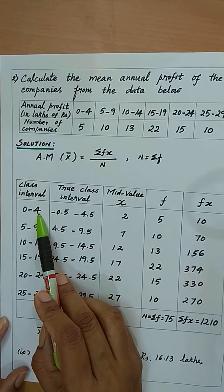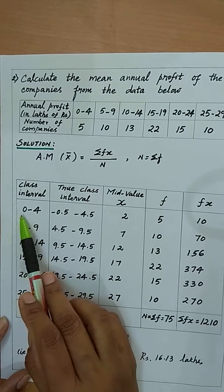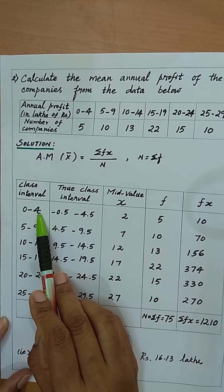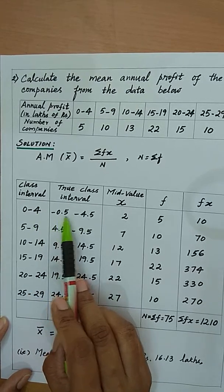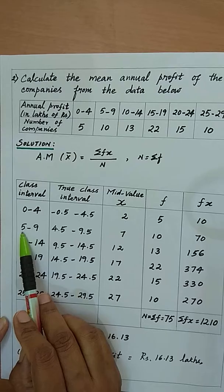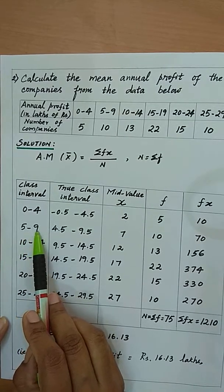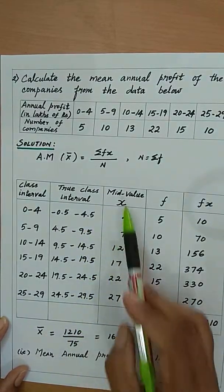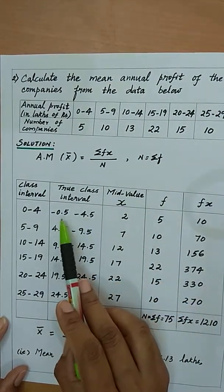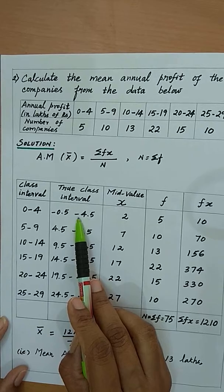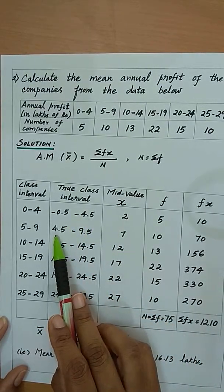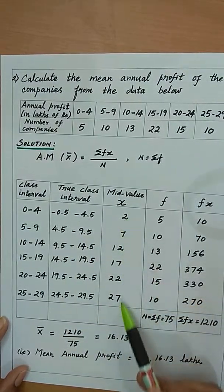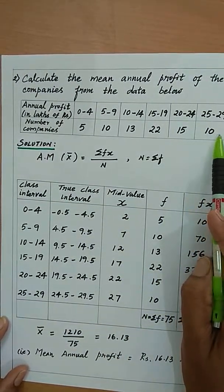For example, 0 − 0.5 to 4 + 0.5 gives −0.5 to 4.5; similarly 5 − 0.5 to 9 + 0.5 gives 4.5 to 9.5, and so on. Then find their mid values: (−0.5 + 4.5) / 2 = 2; (4.5 + 9.5) / 2 = 7, etc. Then write the given frequency values which is the number of companies.